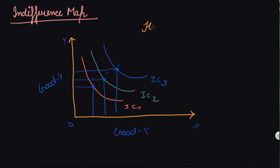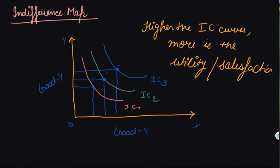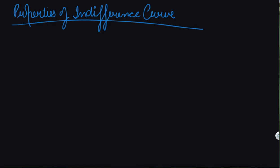Higher the IC curve, more is the utility or satisfaction. Now you have to study the properties of the indifference curve. Let's make an indifference curve and derive the properties from it.